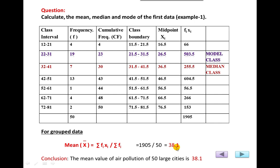According to the definition of statistics: collect the data, organize it, present it in tables and graphs, analyze the data, then write the conclusion. The conclusion follows a fixed structure: write the method, then the variable, then the number of observations, then the result. Conclusion: the mean of air pollution of 50 large cities is 38.1.